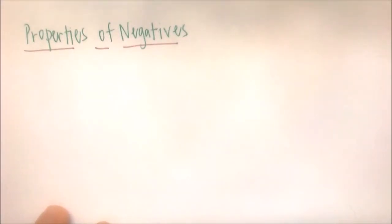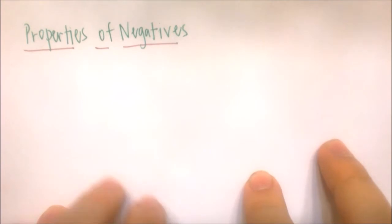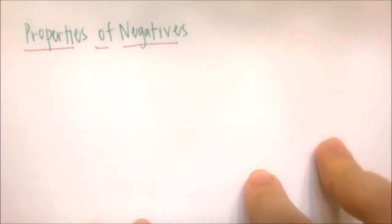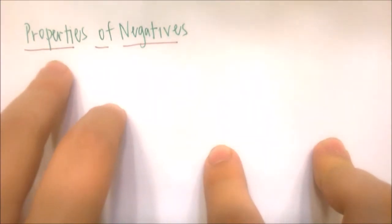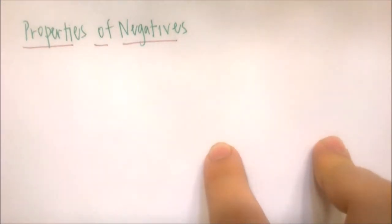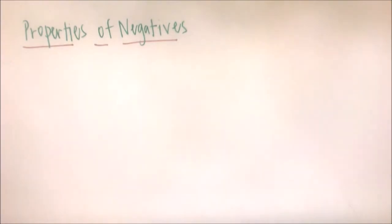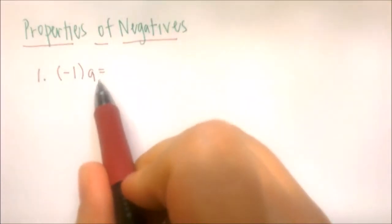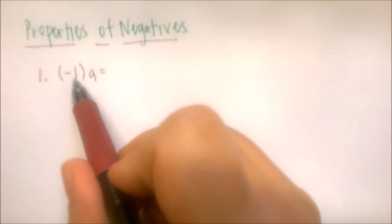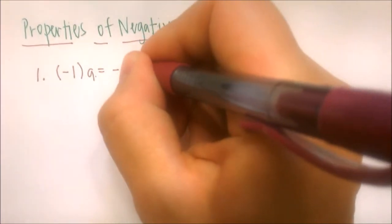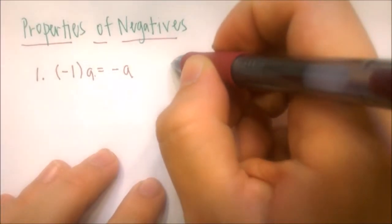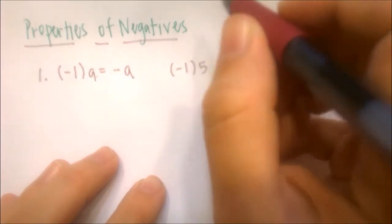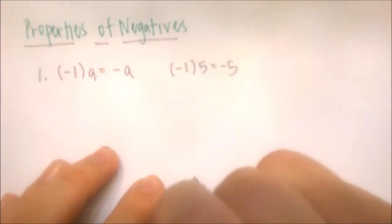Last time we talked about real numbers and their properties. This time we're going over the properties of negatives and the effect negatives have on real numbers. The first property is negative 1 times a. If we multiply a times negative 1, we just get negative a. For example, negative 1 multiplied by 5 gives us negative 5.